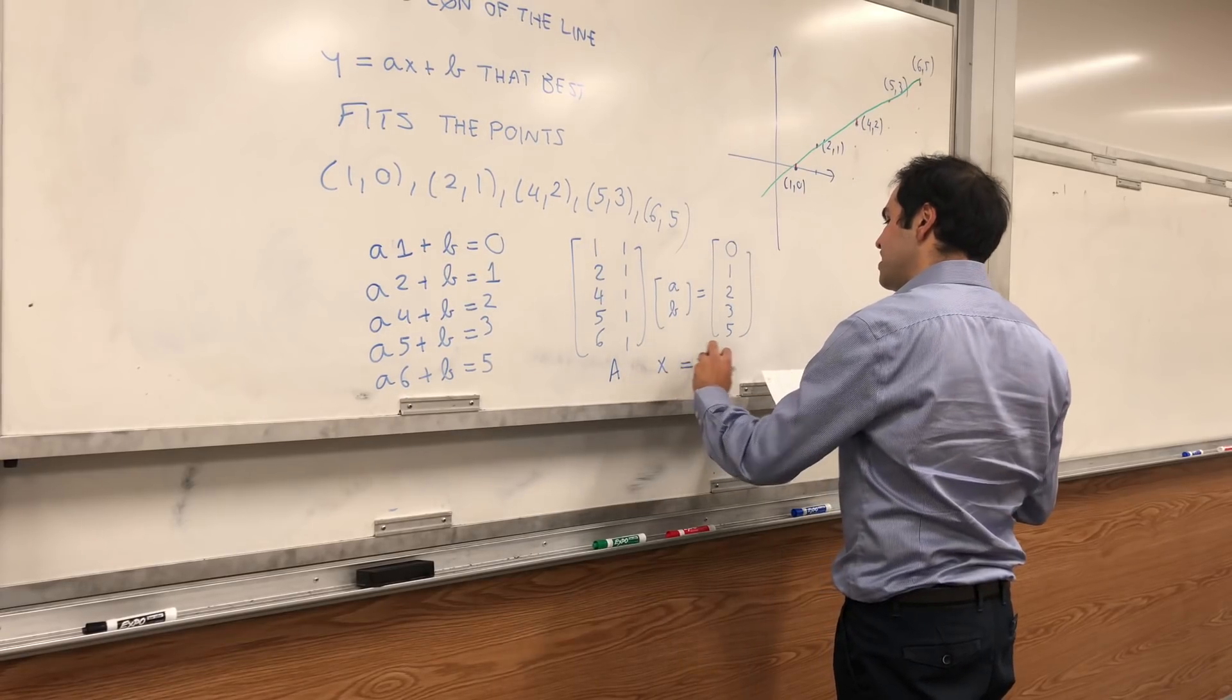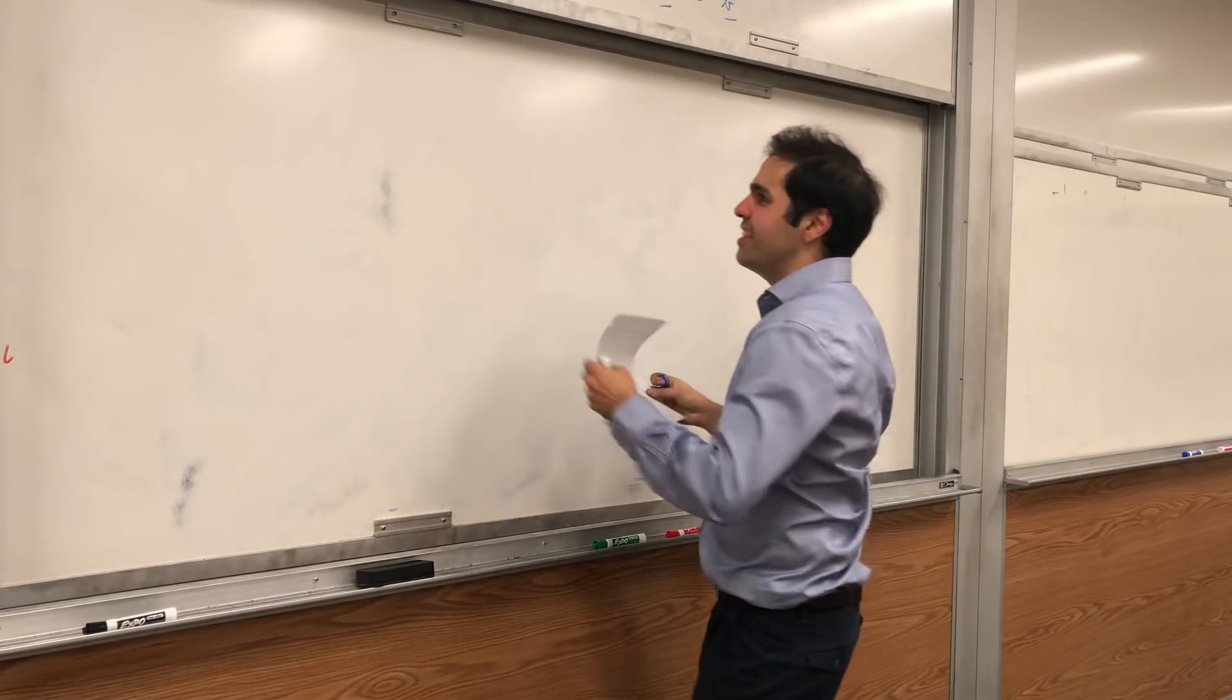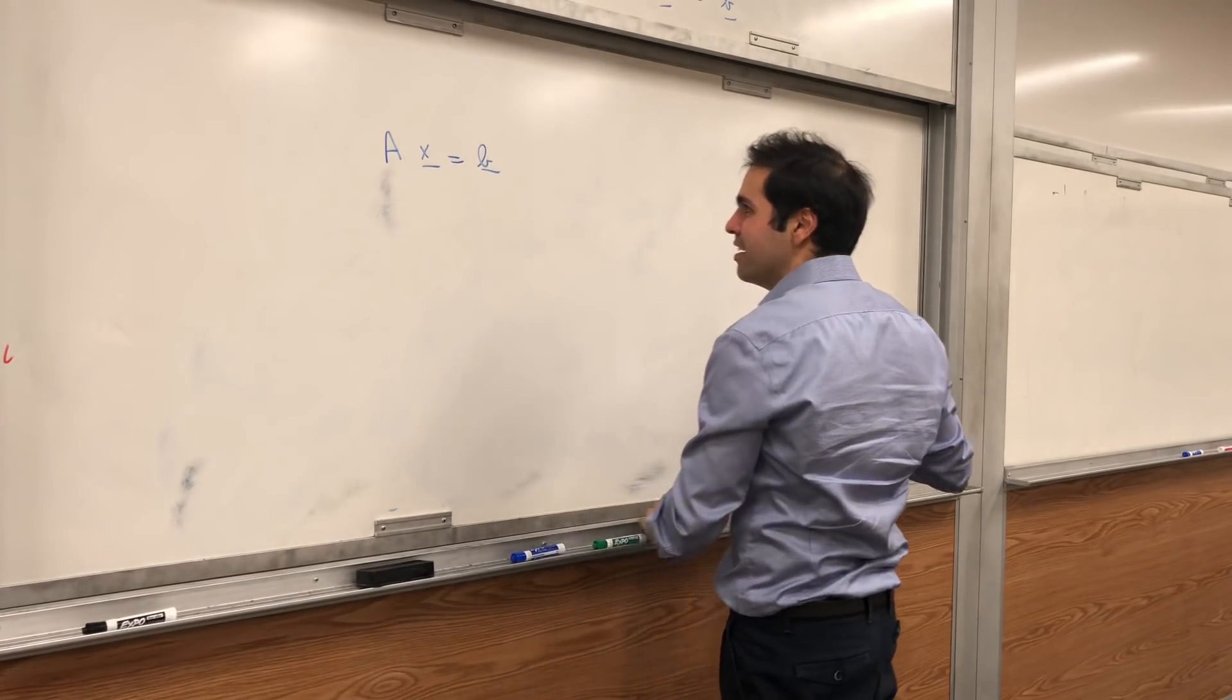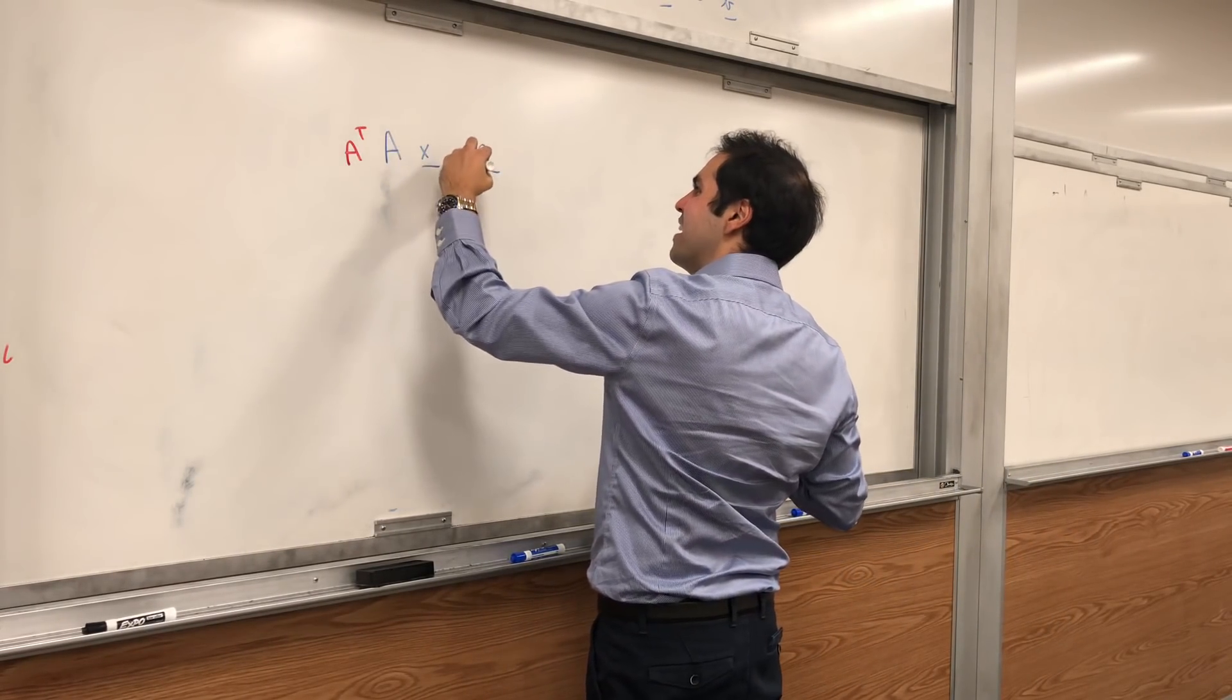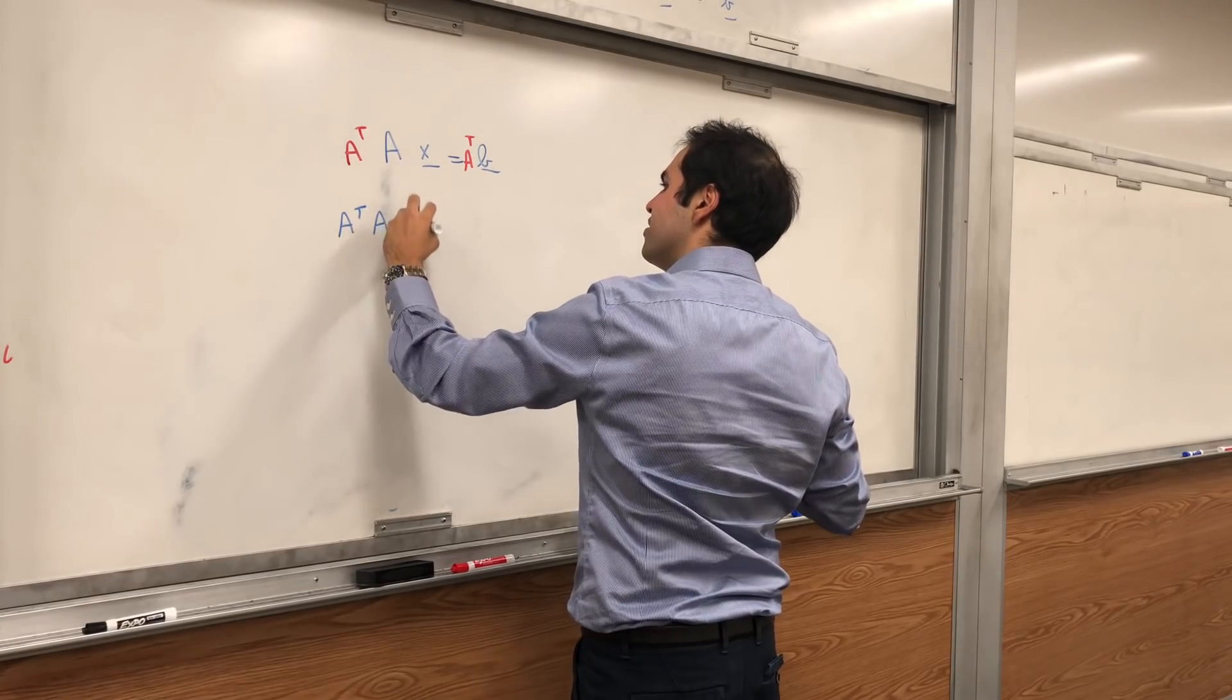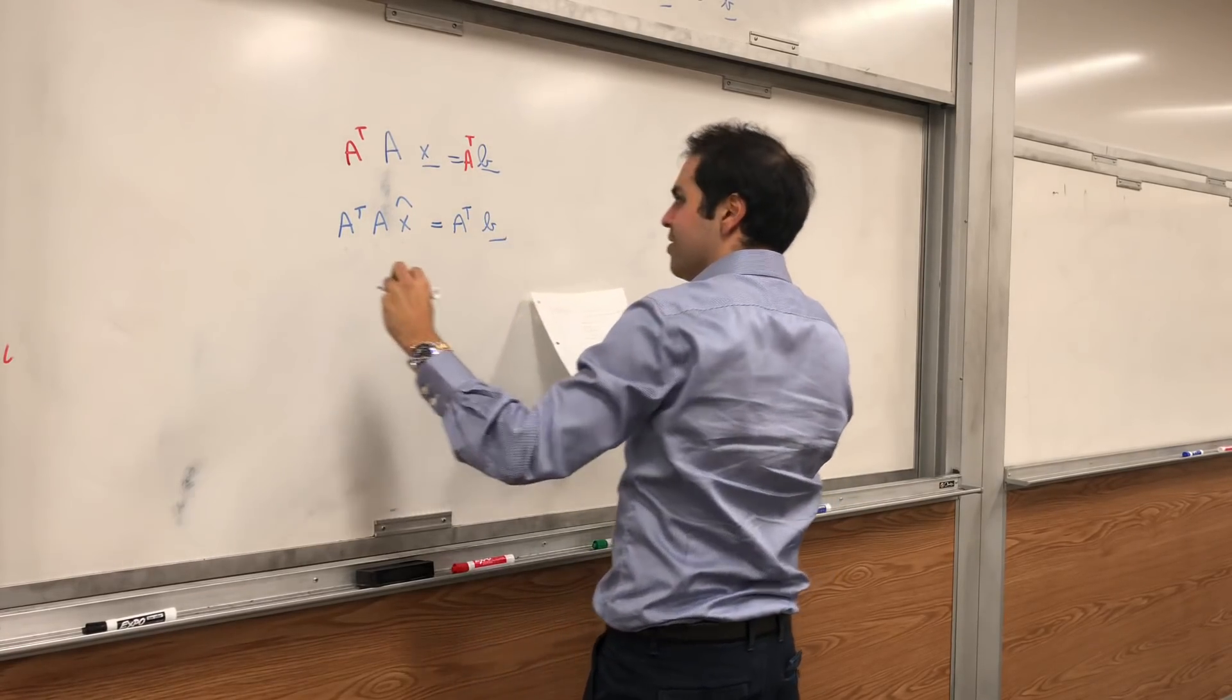So this is AX equals B. And how do you find least square solutions to your equations? Take AX equals B, and multiply both sides by A transpose. So in this statistics course, all I have to do is multiply both sides by A transpose everywhere. Then we get our least squares equation.